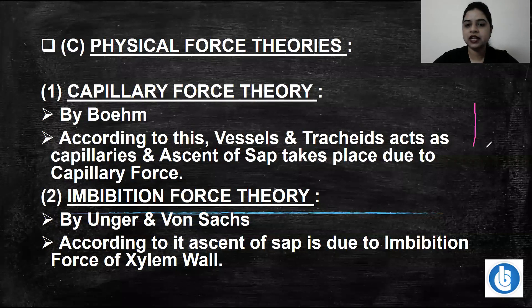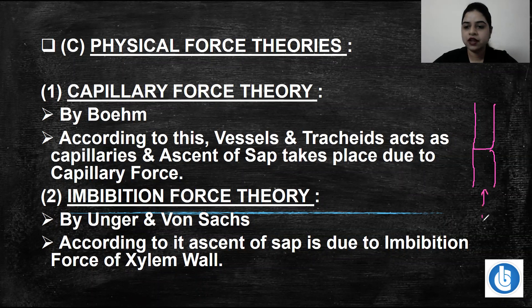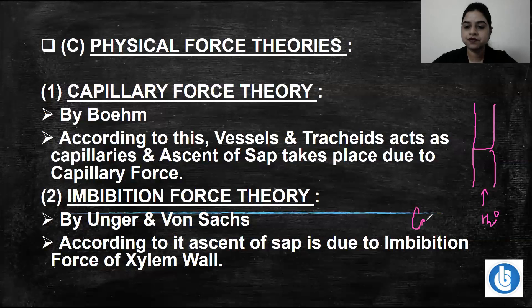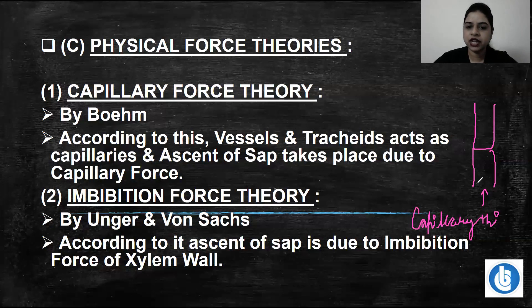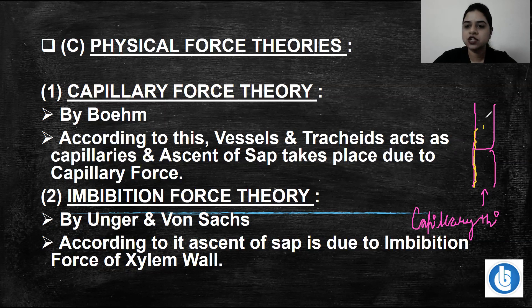Suppose this is a vessel — these are the xylem vessels — and the water molecules have to go up here. When you have capillary water going upward, if you see the presence of water molecules at the walls, it will be a very thin layer. This particular thin layer of water molecules is present on top of the vessel and tracheid walls.